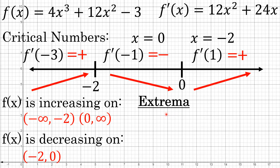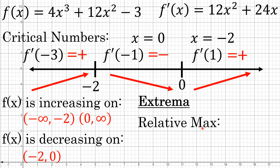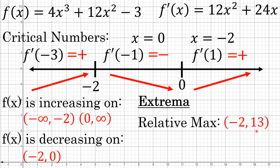Now let's talk about extrema — places where the graph has a peak or valley. The function increases to negative 2 and then decreases, so x equals negative 2 is a relative maximum. Substituting negative 2 into the original function gives f(negative 2) equals 13, so the relative maximum is at the point (negative 2, 13).